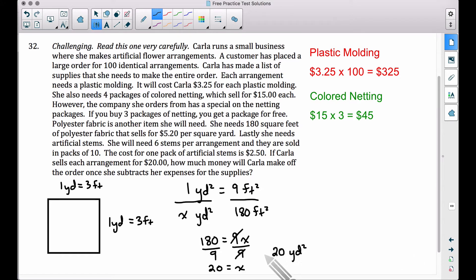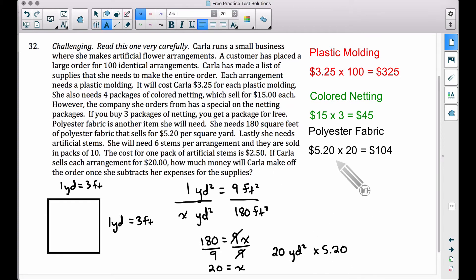Therefore, Carla is going to need 20 square yards, and that's helpful now because for each one of these 20 square yards, she's going to pay $5.20 for each square yard. She needs 20 of them, so let's multiply by $5.20. Therefore, when we multiply $5.20 per square yard times 20 square yards of polyester fabric, she will spend $104.